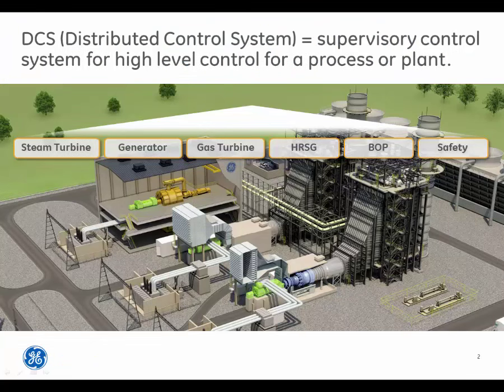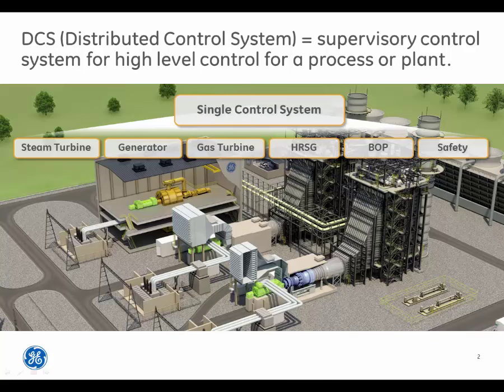A DCS, or distributed control system, is a supervisory control system for high-level control of a processor plant. The DCS typically plays this role at a power plant that also uses control systems for turbines and generators.